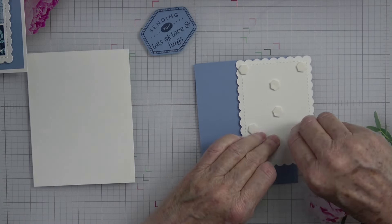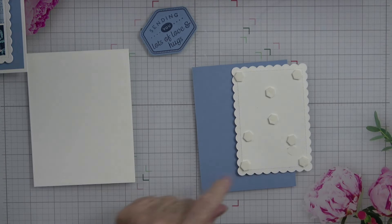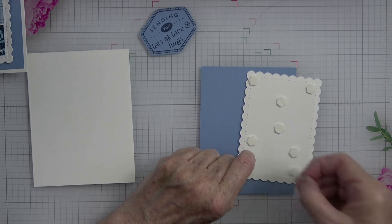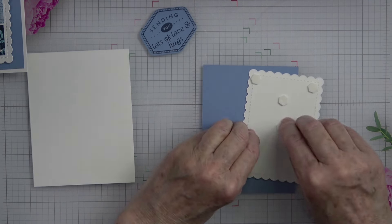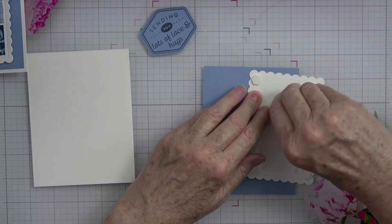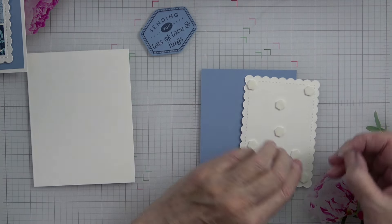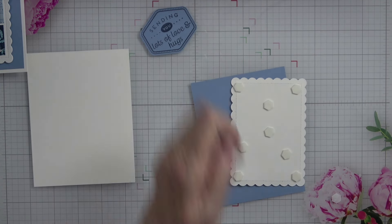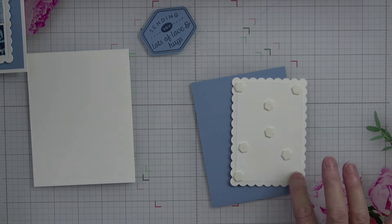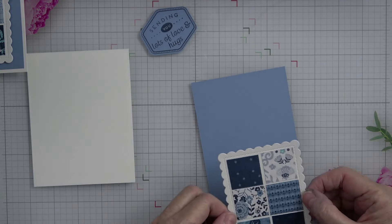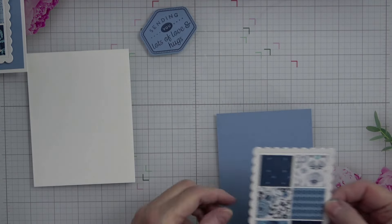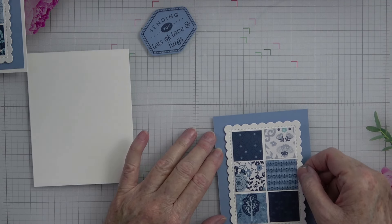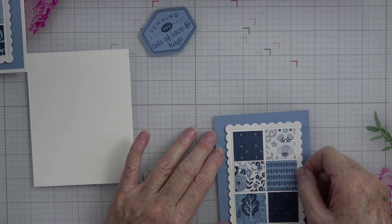So let's peel off our backers and then we'll be ready to put this down on that Boho Blue. So I'm going to set this right down in the middle and I'm just doing a double center, like that.